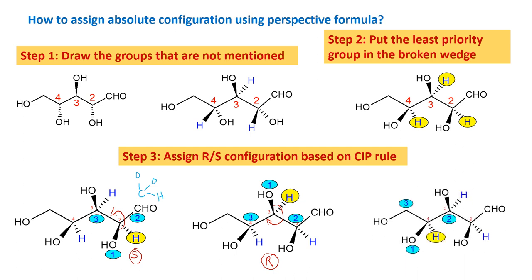For the third stereocenter — carbon 4 — hydrogen again gets the least priority and OH gets the first priority. Between the two adjacent carbon atoms, the carbon given priority 3 has 2 hydrogens and 1 OH group, while the carbon given priority 2 has OH, hydrogen, and another carbon atom — giving it higher priority. When we see the numbering 1, 2, 3, it goes in the counterclockwise direction, so the assignment is S.